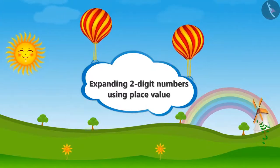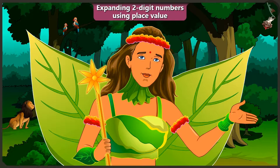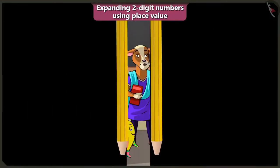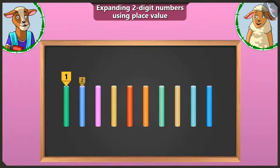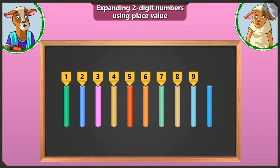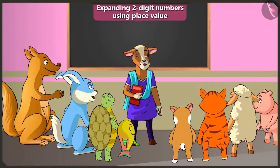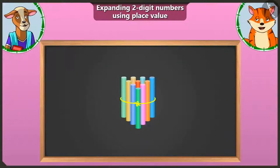Adding two-digit numbers using place value. Friends, today in this video, we will learn expanding two-digit numbers using place value and writing in boxes of tens and ones. In the last video, you learned to make bundles of tens. Lily, make a bundle of 10 and show us. I will tie these 1, 2, 3, 4, 5, 6, 7, 8, 9 and 10 chalk pieces like this — it has become a bundle of 10.